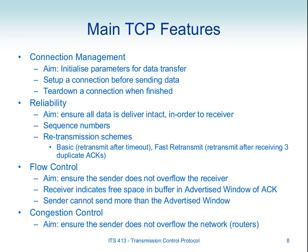The other two features we'll focus on are flow control and congestion control — making sure that when we send data into the internet, we don't cause problems. Flow control is about making sure we don't overflow the receiver computer. If I'm sending to a server, that server has some processing ability, and if I send too fast I may overflow the memory at that computer, causing packet loss. The aim of flow control is to make sure the sender doesn't send so fast that it overflows the receiver.